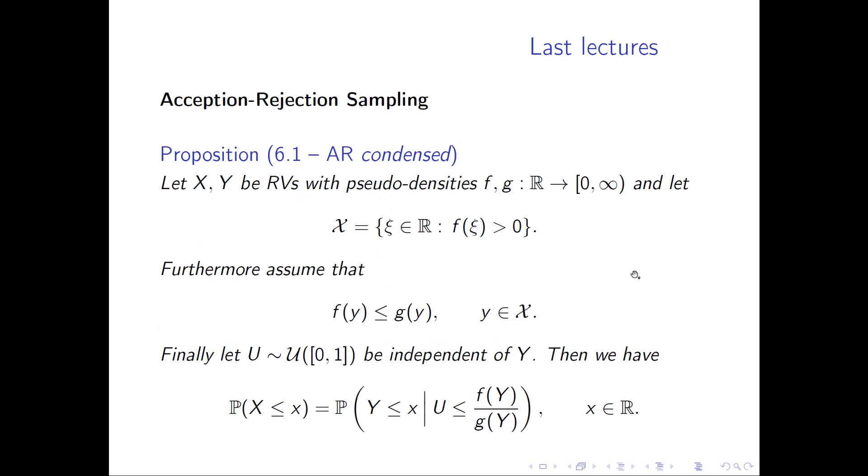The other method we had was acceptance-rejection sampling. Acceptance-rejection sampling uses a proposal and a test in this procedure. The proposal is from a different distribution, and then we test with another independent variable. X and Y are random variables with pseudo densities f and g. We want to sample from X, and we can sample from Y.